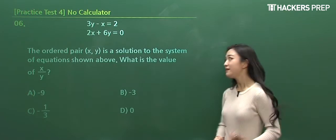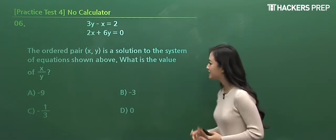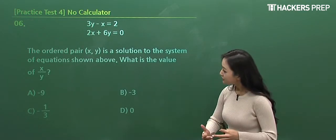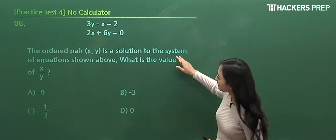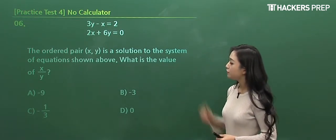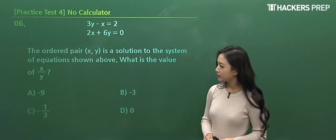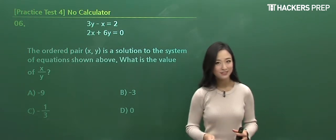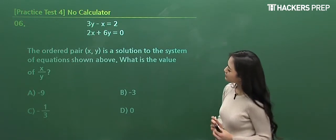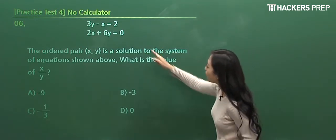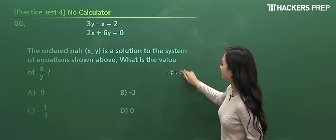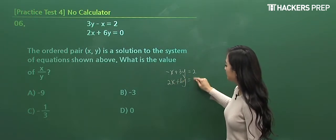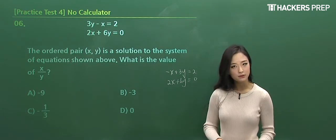So moving on to number 6, we have a systems of linear equations. These question types pop up almost in every single test. So, once again, we have two equations, and they're telling us that the ordered pair is a solution for the two equations above, and they're asking for the ratio of x and y. So once again, how do you go about solving this question? You just simply find the point of interception between the two points. So, what I first did was, since the first equation has y as the first term, I just rewrote the equation. Negative x plus 3y being equal to 2, and a simple 2x, 6y being equal to 0, and from this point on, what should we do here to find the point of intersection?